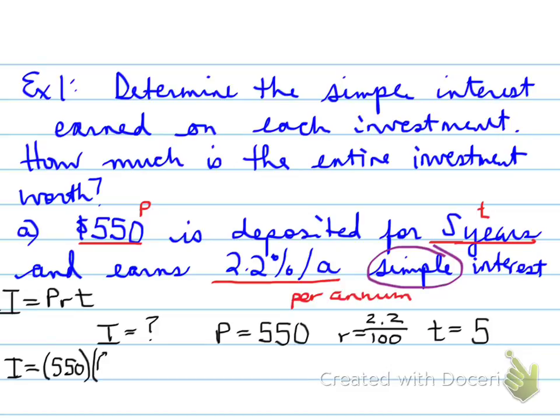and the T value is 5. Plug it into the formula, 550 times 0.022 times 5, and you get a value of $60.50. That is not how much the investment is worth. That is only the interest, the simple interest earned.